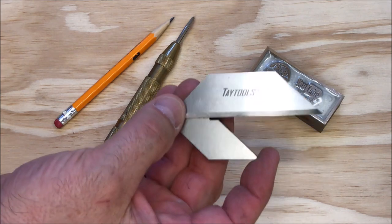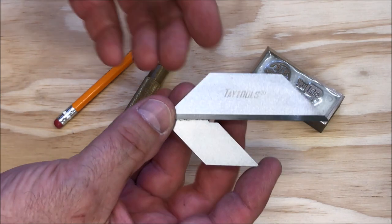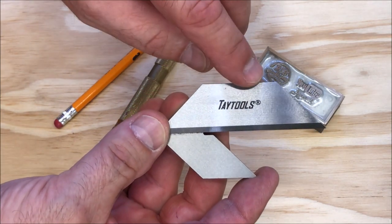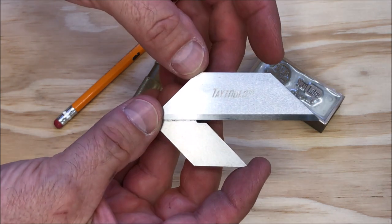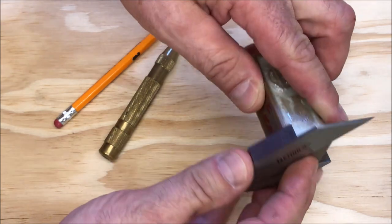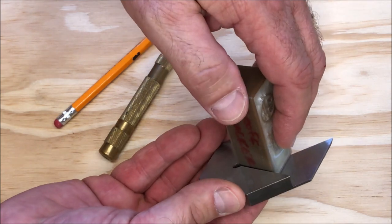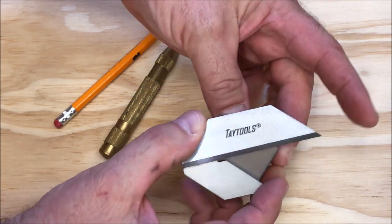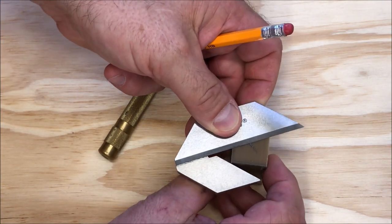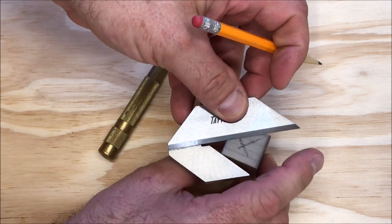This is a tool specifically designed to find the center of small objects. I purchased it off eBay from Tay Tools and I'll put a link in the description. The way this tool works is you put the corner of the blank into the tool and draw a little line, then rotate the blank 90 degrees, put it back into the corner, and draw intersecting lines. This works well on round stock also.